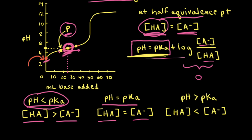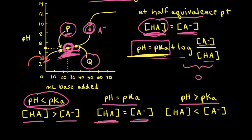Now consider a point Q just to the right of the half equivalence point, where the pH is greater than the pKa. Point Q lies between the half equivalence point (equal amounts of weak acid and conjugate base) and the equivalence point (only conjugate base A⁻ remains). Therefore, at point Q there must be more conjugate base than weak acid. When pH > pKa, the concentration of conjugate base is greater than the concentration of weak acid.